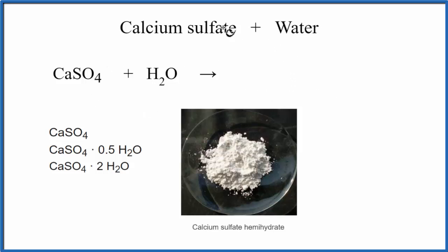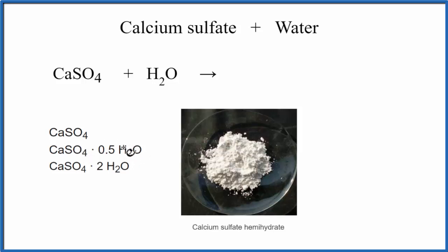So calcium sulfate — you put it in water. The first thing that happens that's interesting is we have this anhydrous CaSO4. When you put water with this, it actually becomes a hydrate. So we have the calcium sulfate hemihydrate right here, and then we have a picture of it here. So it will actually bond to some of the water molecules.